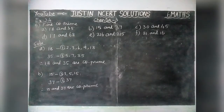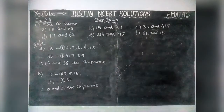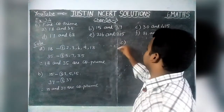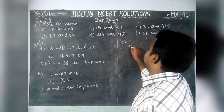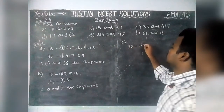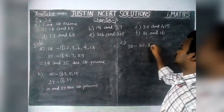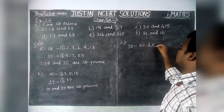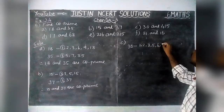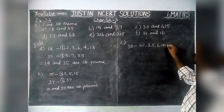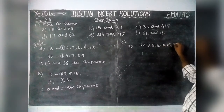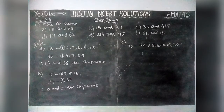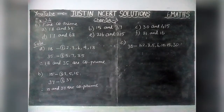Next, we are going to see option C: 30 and 415. Factors of 30 are 1, 2, 3, 5, 6, 10, 15, and 30. Now we are going to find the factors of 415.